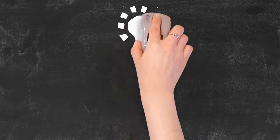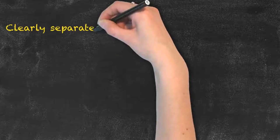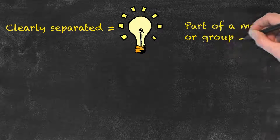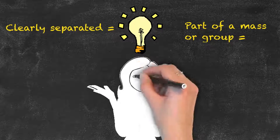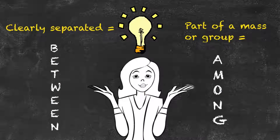Next time you're unsure about which word to use, simply ask yourself if you're referring to something that is clearly separated or something that is part of a mass or a group. That's it for today, see you next time.